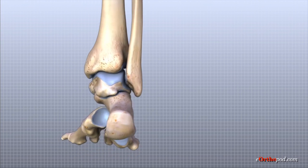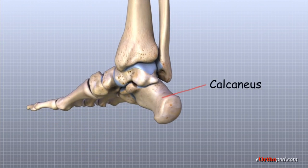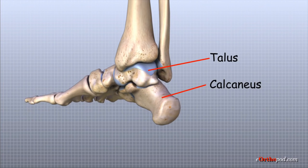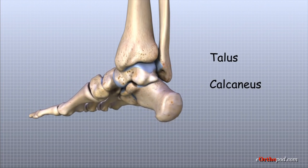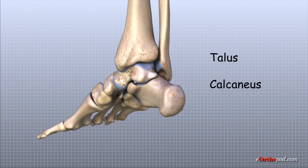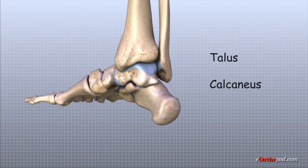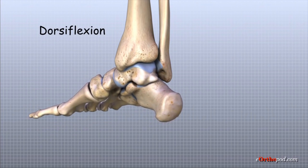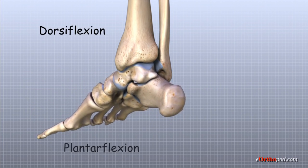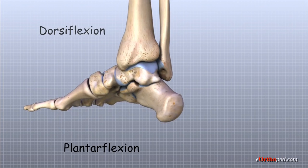The bottom of the talus sits on the calcaneus, the bone that makes up the heel. The talus works like a hinge inside the ankle socket to allow your foot to move up, called dorsiflexion, and down, called plantarflexion.